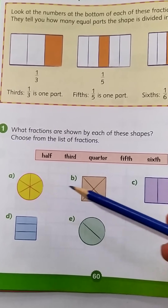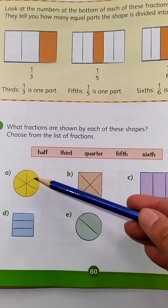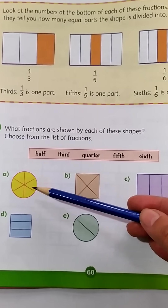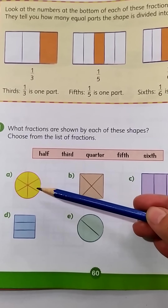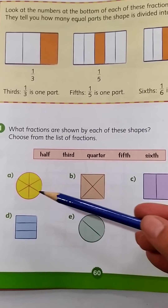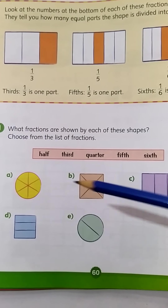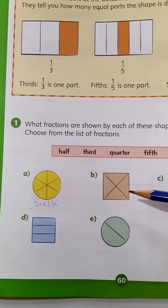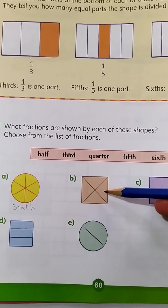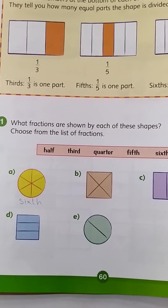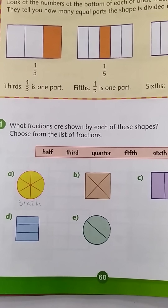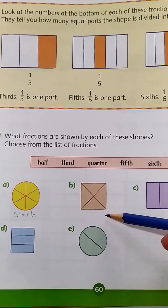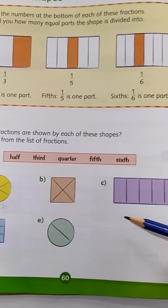How many parts are there? One, two, three, four, five, and six. So what are we going to call it? Sixths. Sixths is written here, so you will write it down under the shape. Then what is this? How many parts? One, two, three, four. And you know that whenever there are four parts, they are called quarters. So this is quarter — you will write down quarter under the shape.